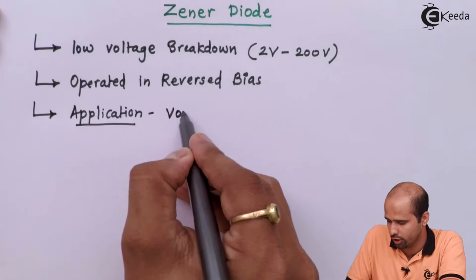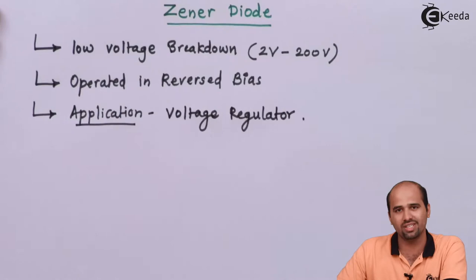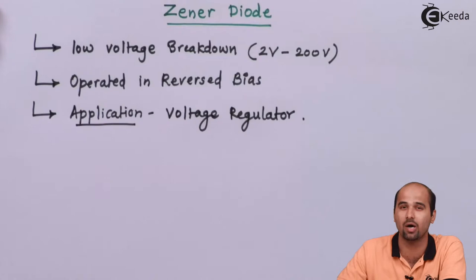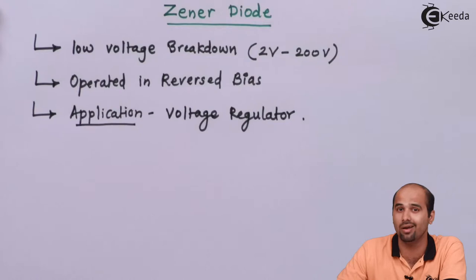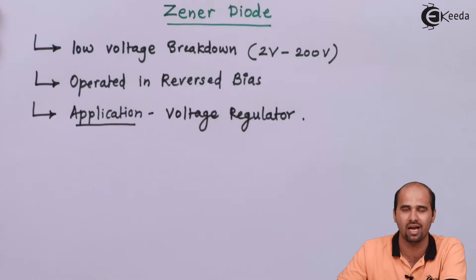With these three points we will start learning the Zener diode. Three questions will come to mind: why Zener diode, what is Zener diode, and how does Zener diode work. The question 'why Zener diode' is clear — our normal p-n junction diode is not working under reverse bias condition after Vbr; current continuously increases and we cannot limit it, so to limit current we use a different doping mechanism in the construction of the diode itself.